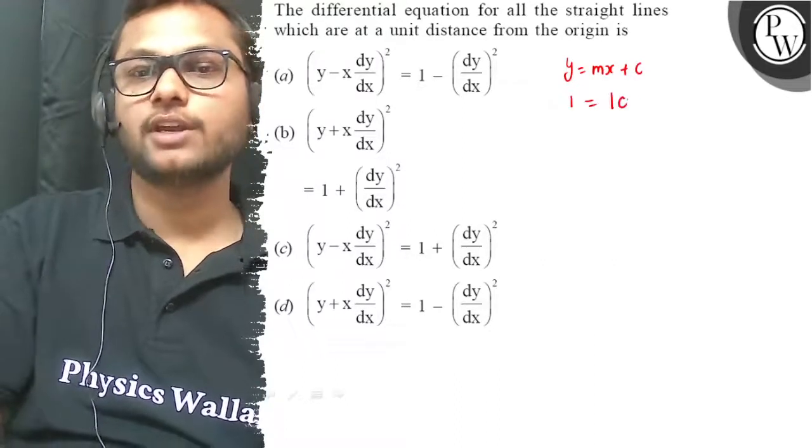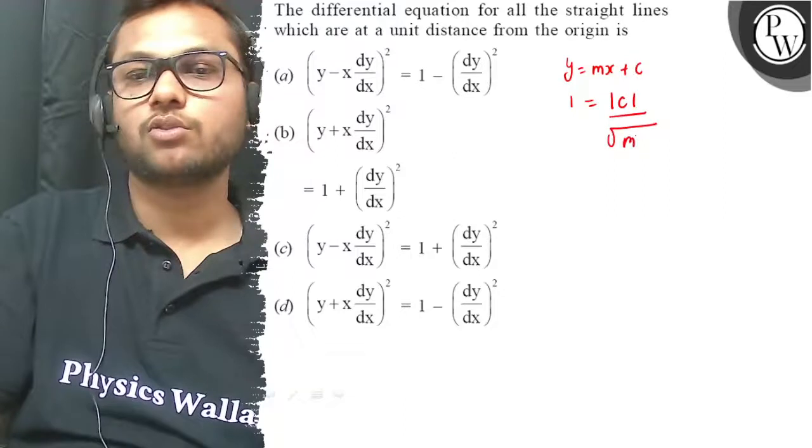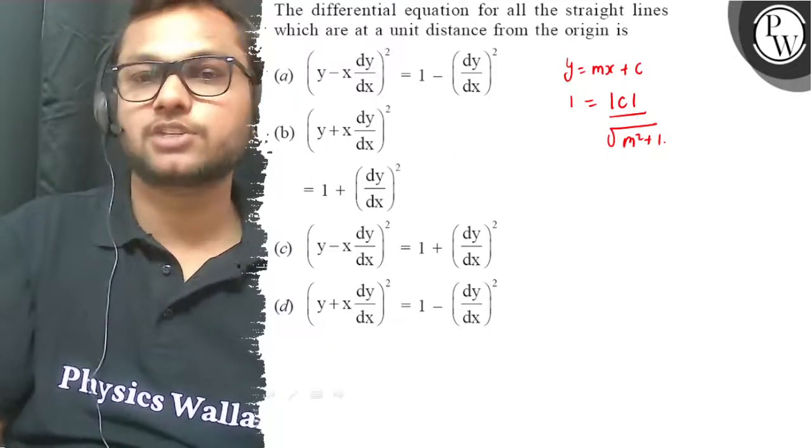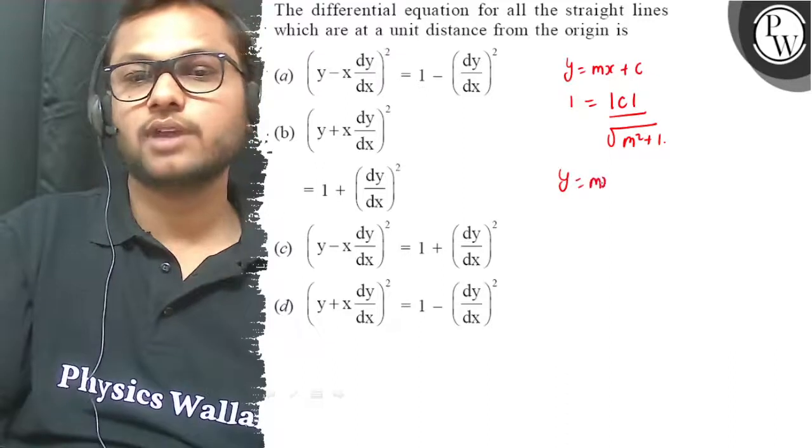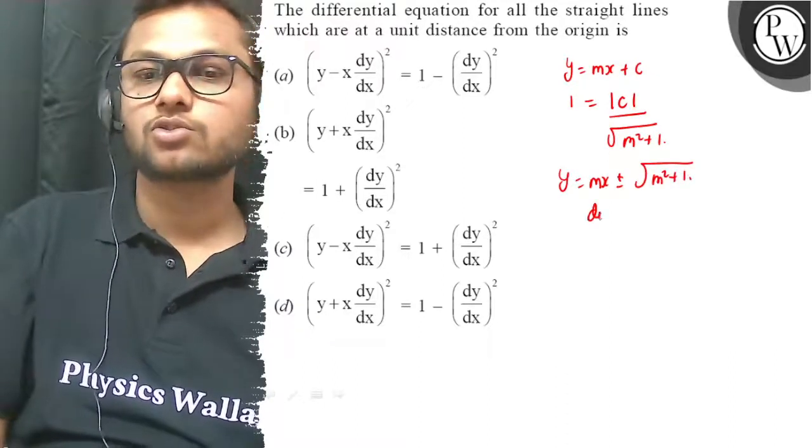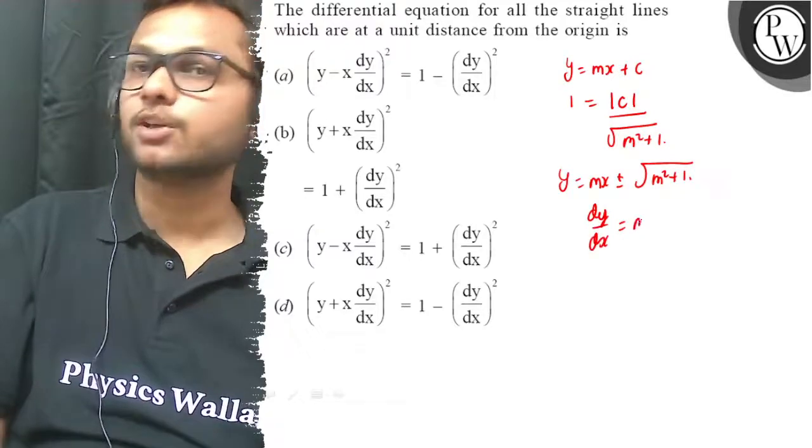We can write it down as 1 equals to mod C equals to square root of m square plus 1, by the formula of distance formula. So it becomes y equals to mx plus minus square root of m square plus 1. So we can say that dy by dx equals to m.